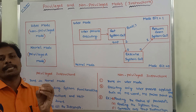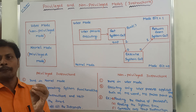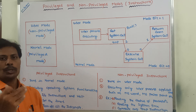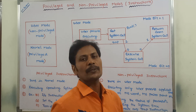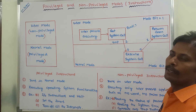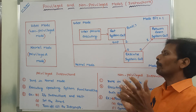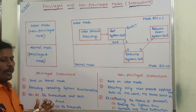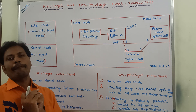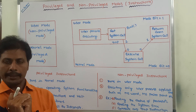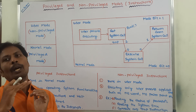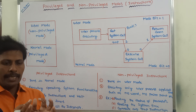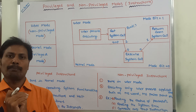Context switching is nothing but switching from user mode to kernel mode or kernel mode to user mode. To understand why this type of switching is done, we have to look at an example. Suppose we want to read a file that is stored in the hard disk. After reading the file, we want to modify that file.